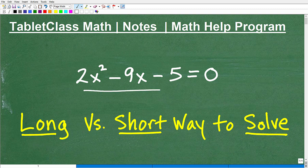Okay, so here we have this equation: 2x² - 9x - 5 = 0, and we're going to solve this a couple ways. We're going to first solve it the long way, and then we're going to solve it the shorter way.